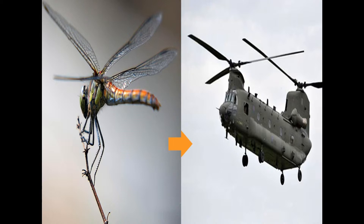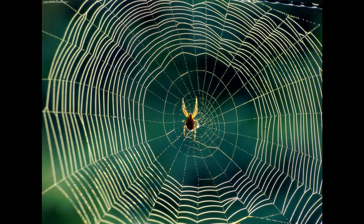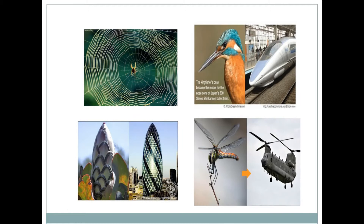We can see that the structures of natural species are also scientific in nature — they are scientific in themselves. Many things which exist in nature are actually scientific; they are creative and can provide so much to us to solve our real life problems. These are examples which are purely inspired from our mother nature.